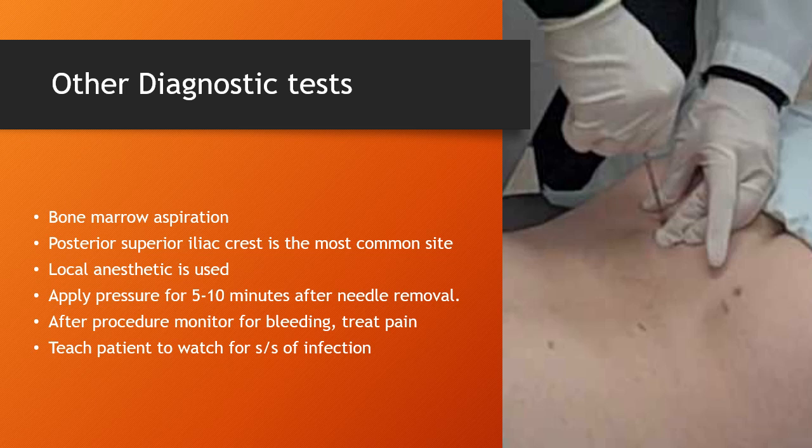Other diagnostic tests include bone marrow aspiration, where we study the bone marrow to identify the presence of leukemia, malignancies, and to help determine the causes of anemia. The posterior superior iliac crest is the most common site; it's done under local anesthetic, and afterwards you apply pressure for five to ten minutes and can apply ice if needed. Monitor for any bleeding, treat for pain, and teach the patient to watch for signs and symptoms of infection.